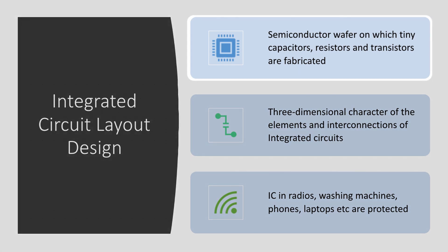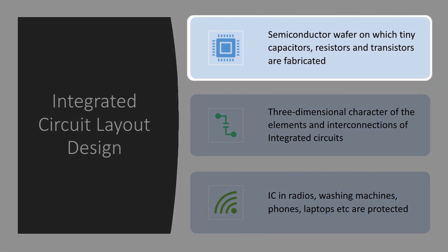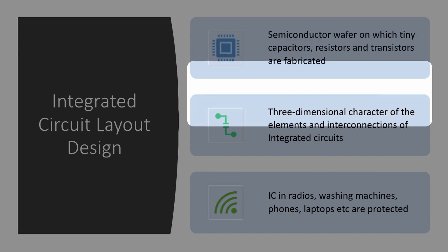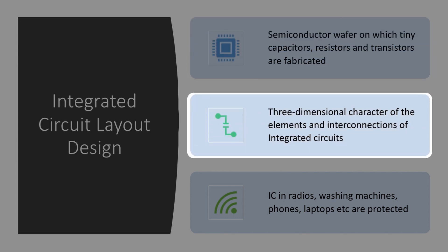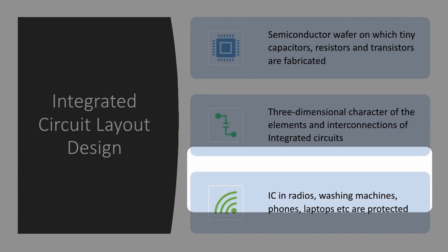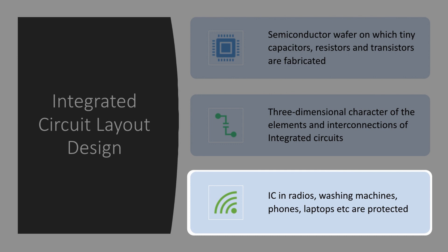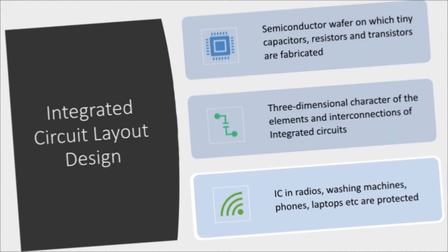The semiconductor wafer on which tiny capacitors, resistors, and transistors are fabricated — it is a three-dimensional character of the elements and interconnections of the integrated circuits. Integrated circuits in radios, washing machines, phones, laptops, etc. are protected.